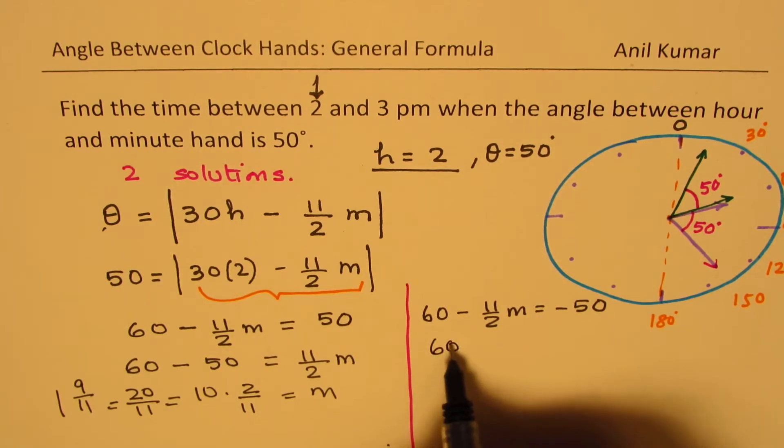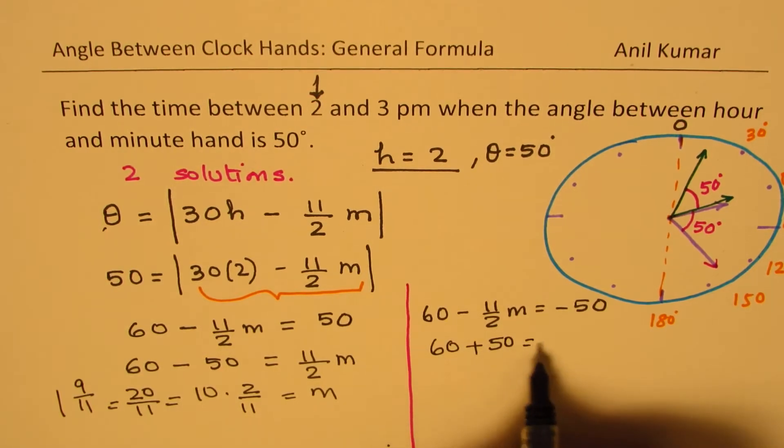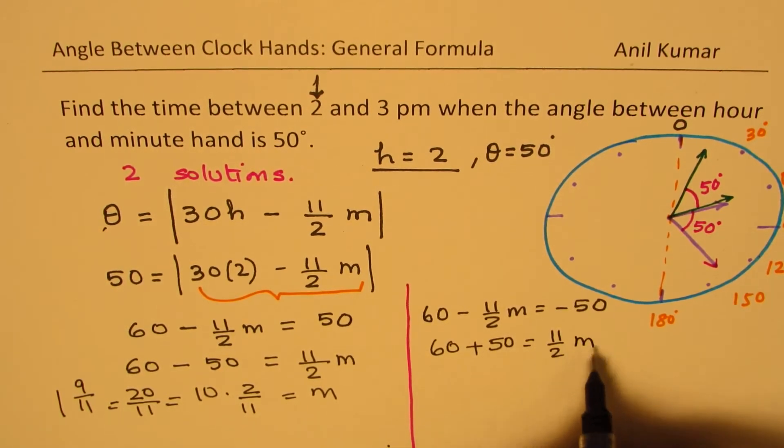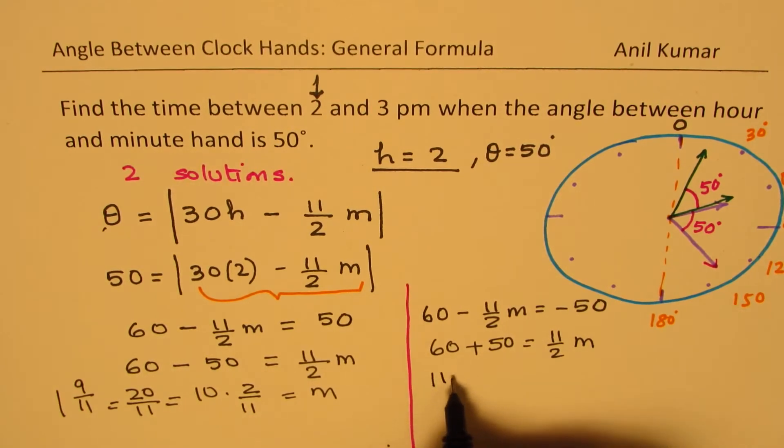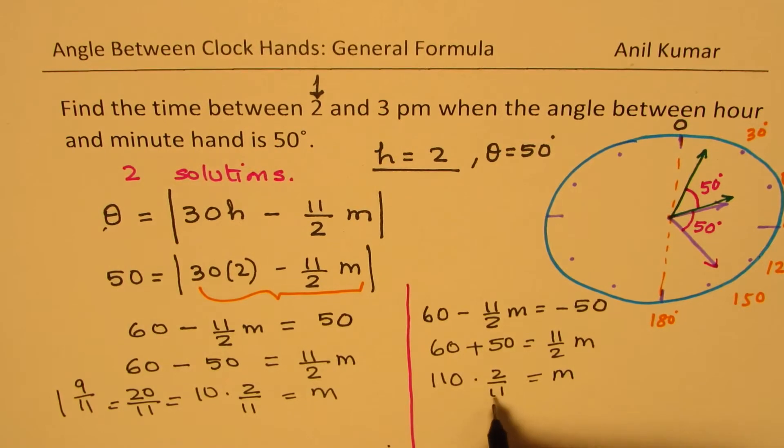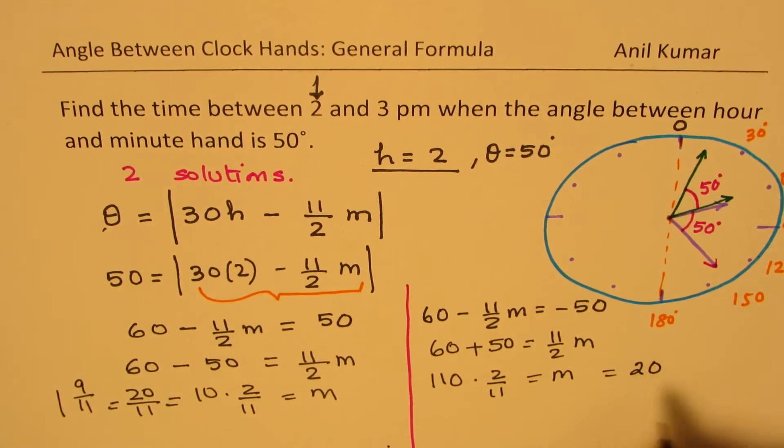On this side, we have 60 plus 50 equals to 11 over 2 M, or we have 110 times 2 over 11 equals to M, and that gives you M equals to, this goes 10 times, M equals to 20, right? So we have two solutions here.